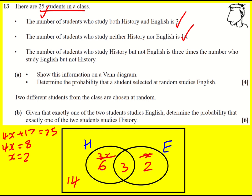To determine the probability that a student selected at random studies English, it's going to be any of these 5, and there are 25 in total, so 5 over 25.